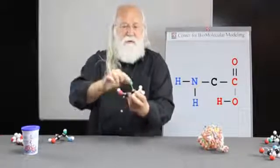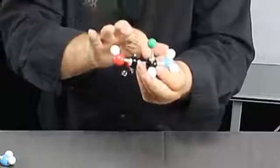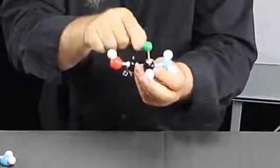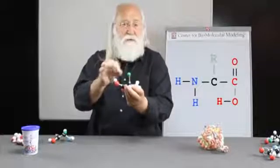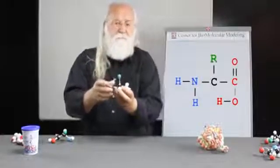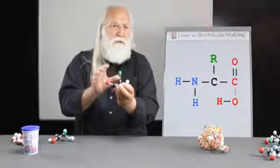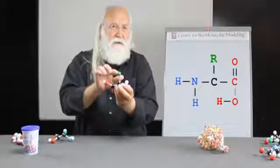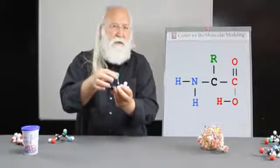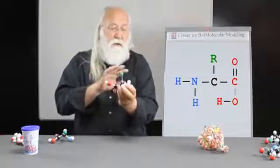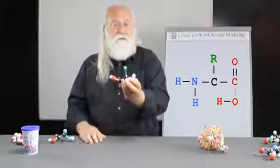But then this green sphere attached to the alpha carbon, this is just a generic side chain or R group, we sometimes say. And this is what makes each of the 20 amino acids structurally different. There are 20 different chemical structures that make up the side chains of the amino acids. So in that sense, every amino acid is different.